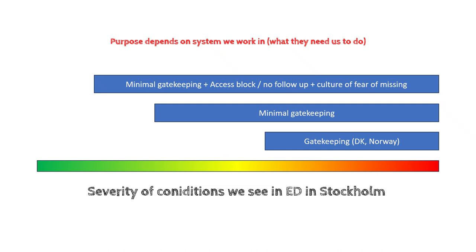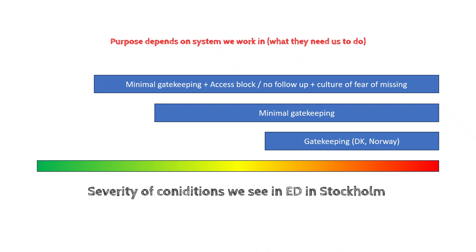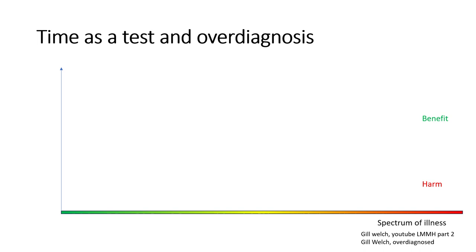For anyone who's worked in Stockholm or other larger cities with an open system, you'll see a lot of these low-acuity patients. In this ocean, some high-acuity patients are hiding. In systems without much gatekeeping, one of the main purposes of the emergency physician is to find the needle in the haystack — but also not to hurt the low-acuity patients, because there's a problem with seeing people at the wrong level of care, called the Leon principle.